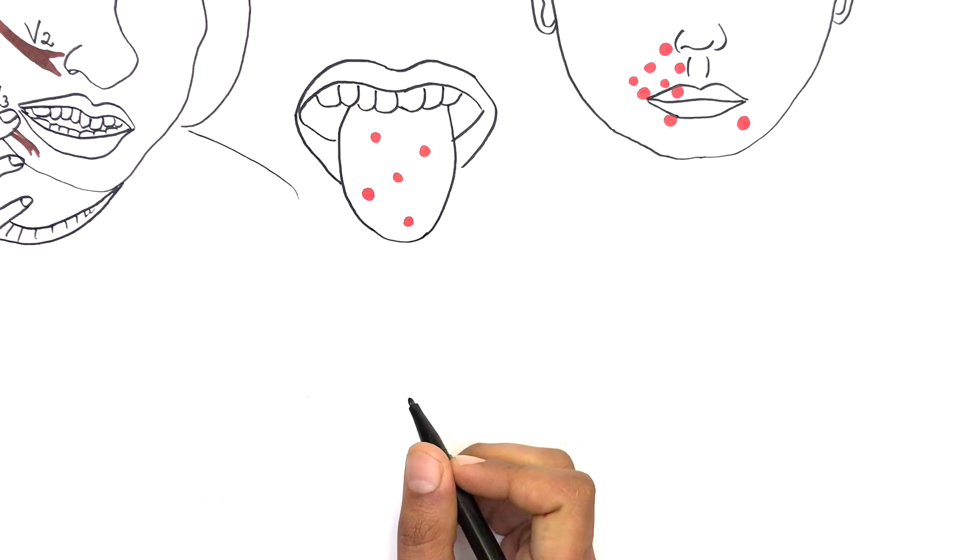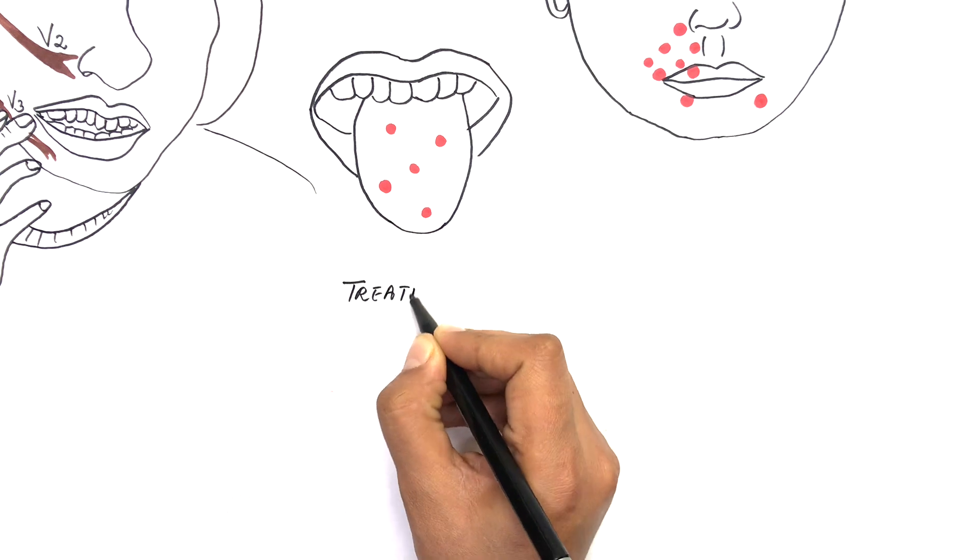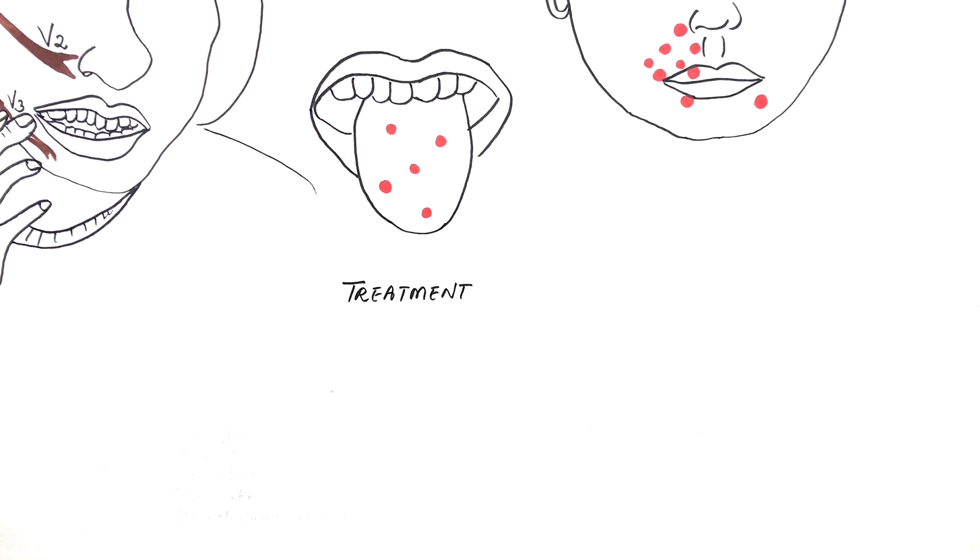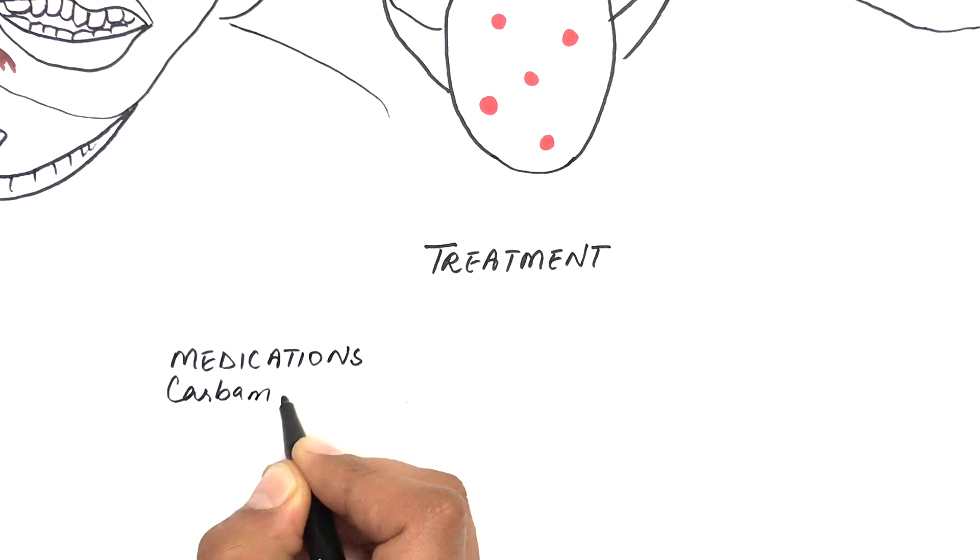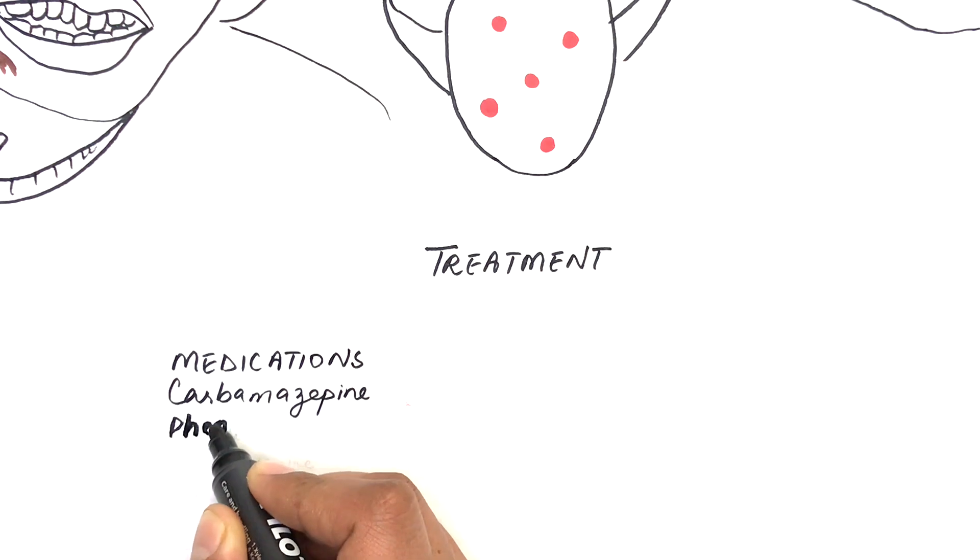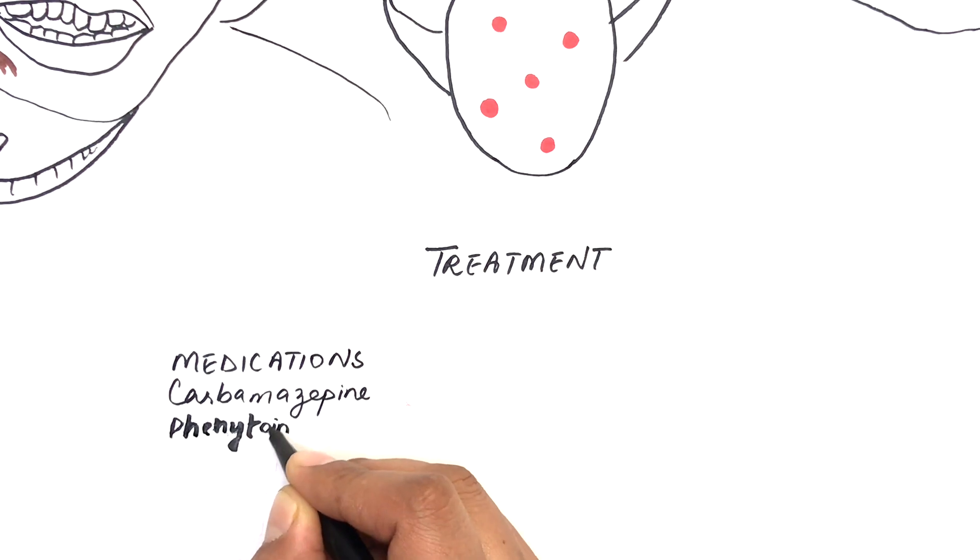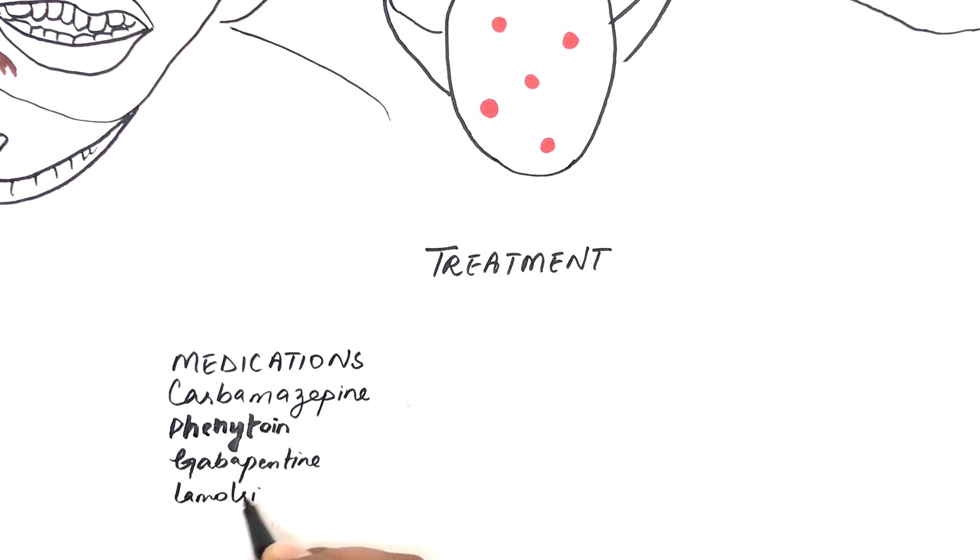The initial treatment of trigeminal neuralgia is done through anticonvulsant medications. The first anticonvulsant drug of choice for trigeminal neuralgia is carbamazepine. Other anticonvulsant medications like phenytoin, gabapentin, and lamotrigine can also be used.